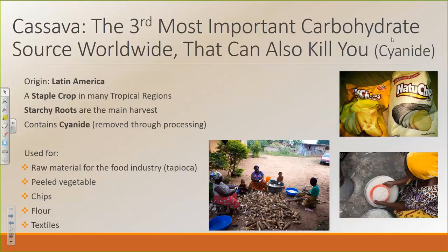So cassava is originally from Latin America, but today it's considered a staple crop in many tropical areas of the world. It's harvested mainly for its starchy roots, but the above-ground portions of the plant are often used as livestock feed or even in soups and stews. Something interesting about it is the roots have a lot of cyanide in them, which can be toxic. Luckily, it's easily removed through boiling and soaking. The starchy product is often used as a raw material for the food industry — you may have heard of tapioca. And then you also have some companies who will turn it into things like chips, flour, or even different textiles.